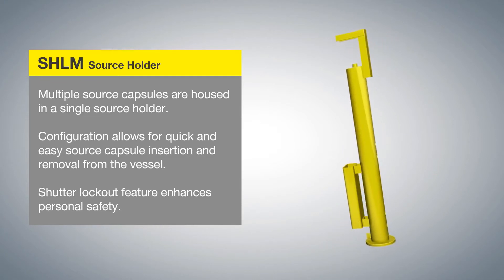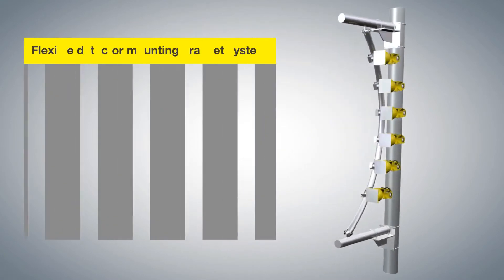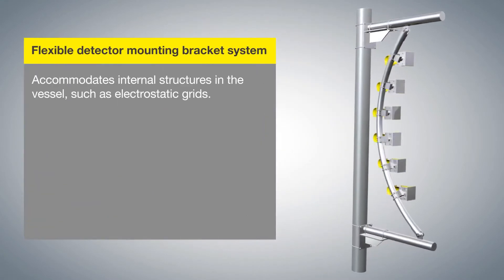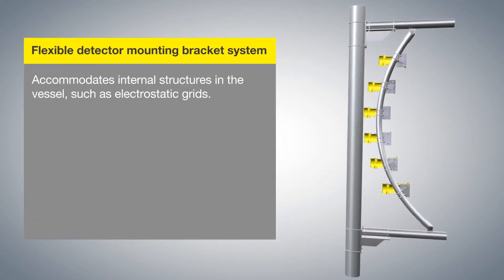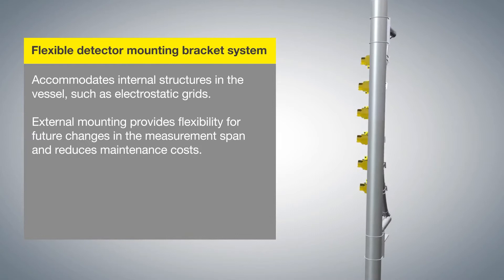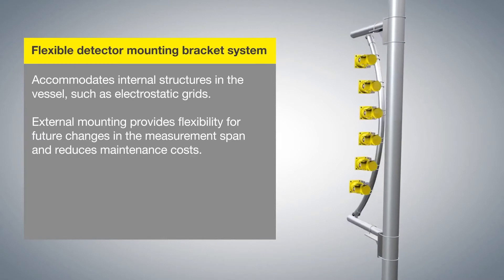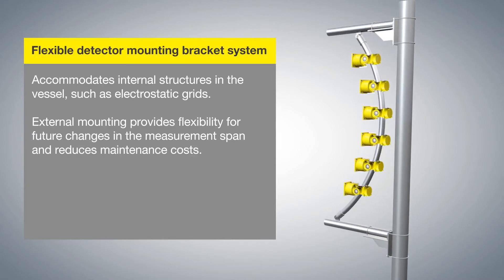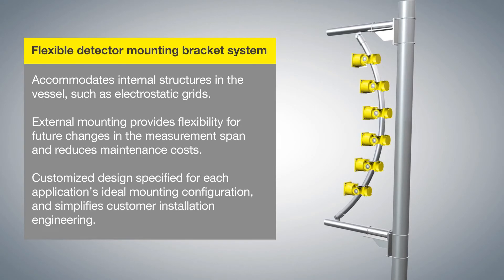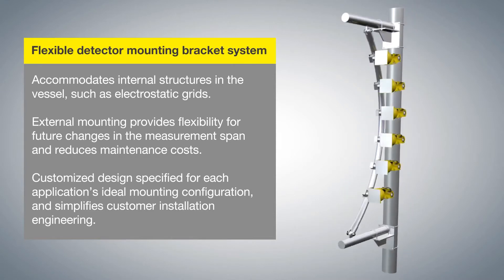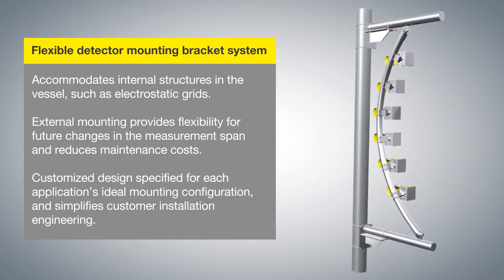Flexible Detector Mounting Bracket System: Accommodates internal structures in the vessel, such as electrostatic grids. External mounting provides flexibility for future changes in the measurement span and reduces maintenance costs. Customized design specified for each application's ideal mounting configuration simplifies customer installation engineering.